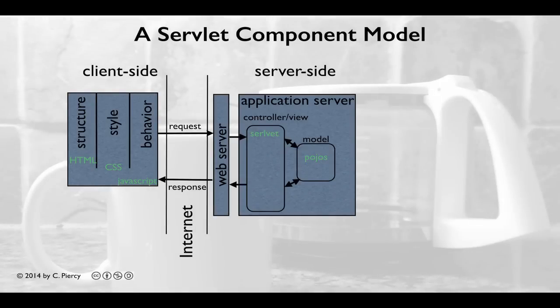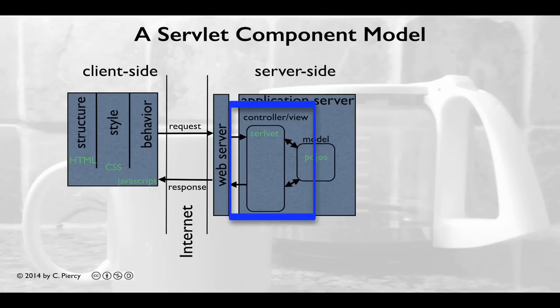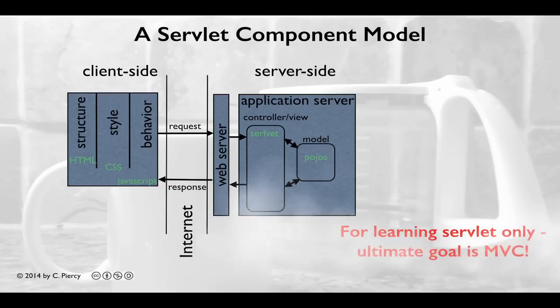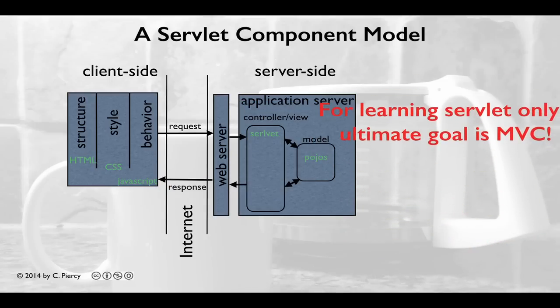In our quest to learn the MVC design pattern as implemented in Java, we are currently going to concentrate on the servlet. We're going to let our servlet handle both the controller and the view. So in the servlet component model, the request will come in from the client, and the servlet will get the request and handle that as the controller. It will use any classes as needed. Then when all the information is processed, the servlet will create the view and send back the response. Keep in mind that this is for learning the servlet only. Our ultimate goal is the MVC design pattern.